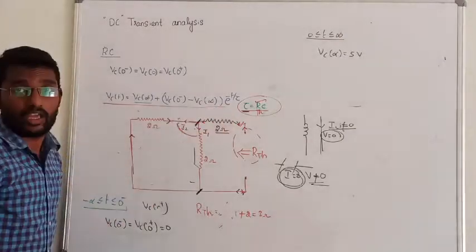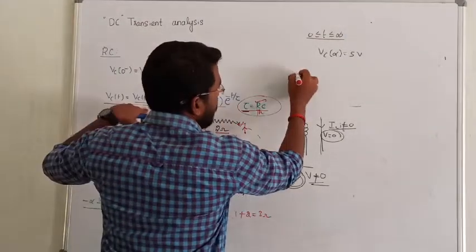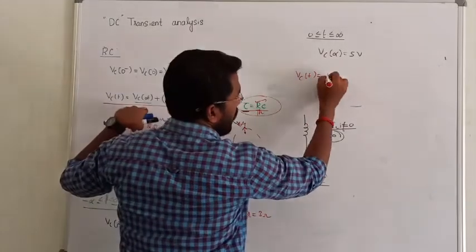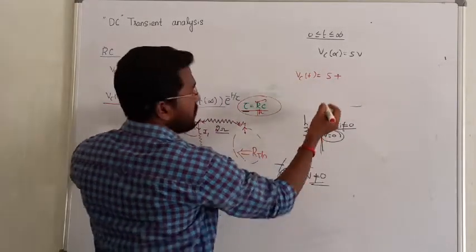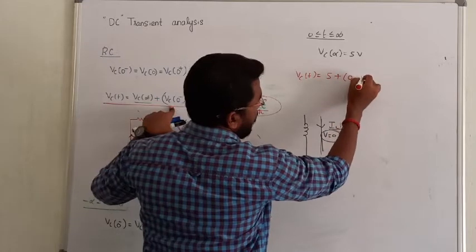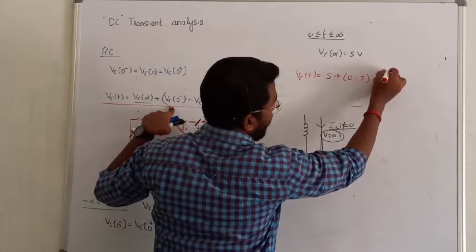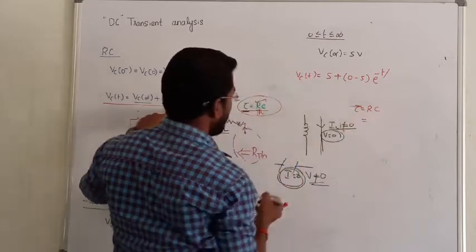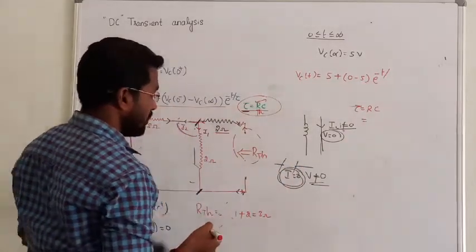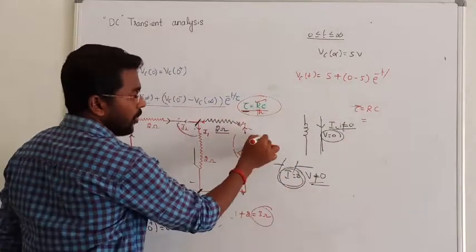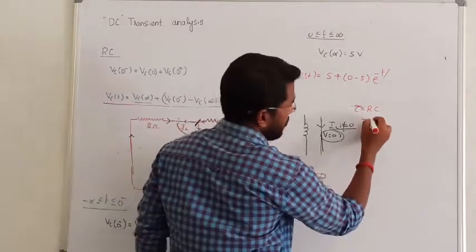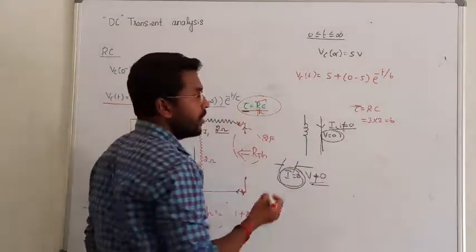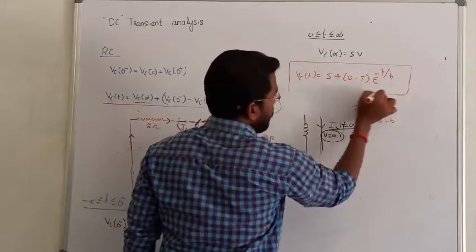Getting back to the equation: VC(t) = VC(∞) + [VC(0) − VC(∞)] · e^(−t/τ). The value of VC(∞) is 5V, and VC(0) is 0V. So VC(t) = 5 + (0 − 5) · e^(−t/τ). Tau is equal to R × C = 3 × 2 = 6 seconds. Therefore, VC(t) = 5 − 5·e^(−t/6). That is the expression for VC(t).